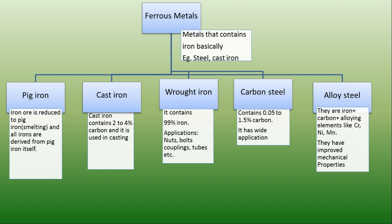Another type of cast iron is white cast iron. It contains carbon in the form of iron carbide. Iron carbide is very hard and hence it is useful for making rolls and dies.